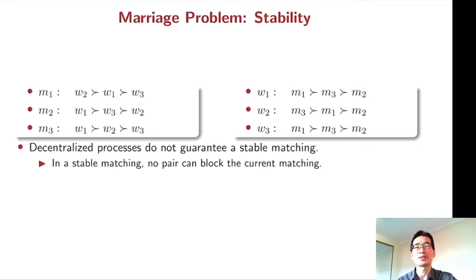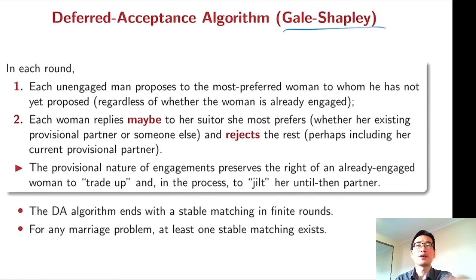And the question is, does a stable matching even exist? If so, then how can we find it in a centralized way? Gale and Shapley answered this question in the 1960s, introducing the so-called deferred acceptance algorithm. As the name suggests, the algorithm runs like this.